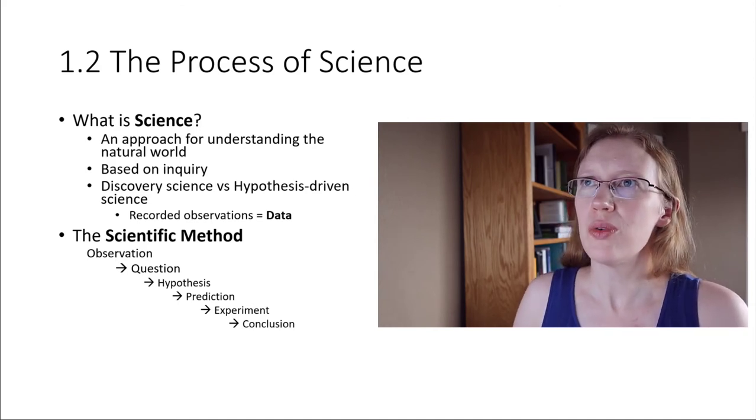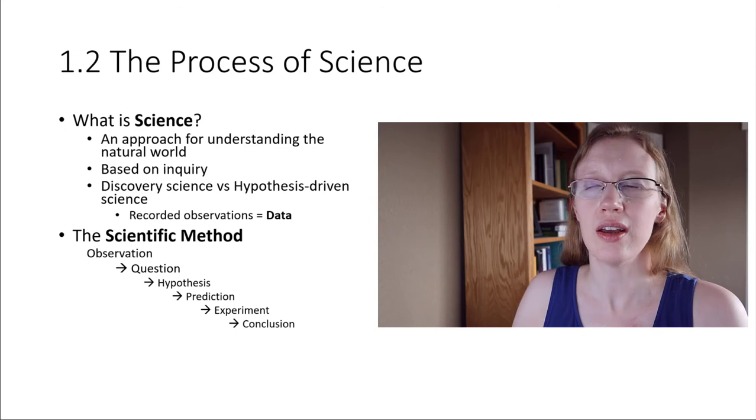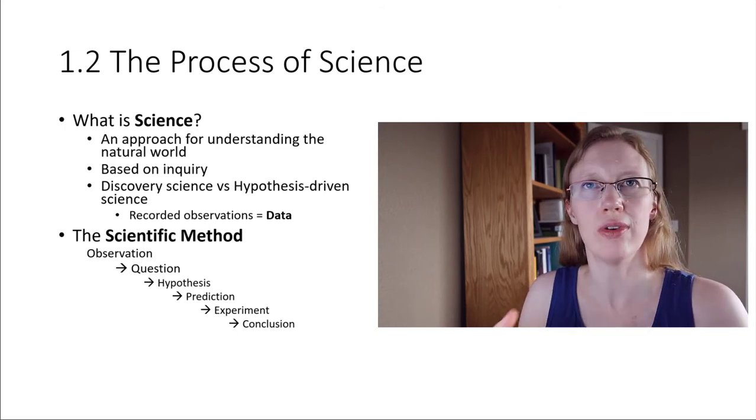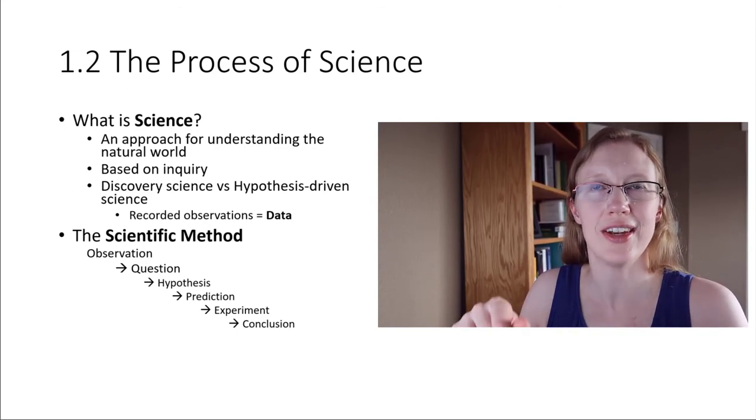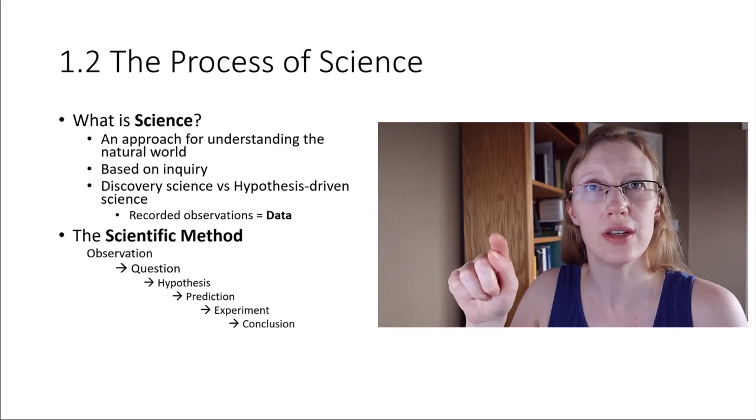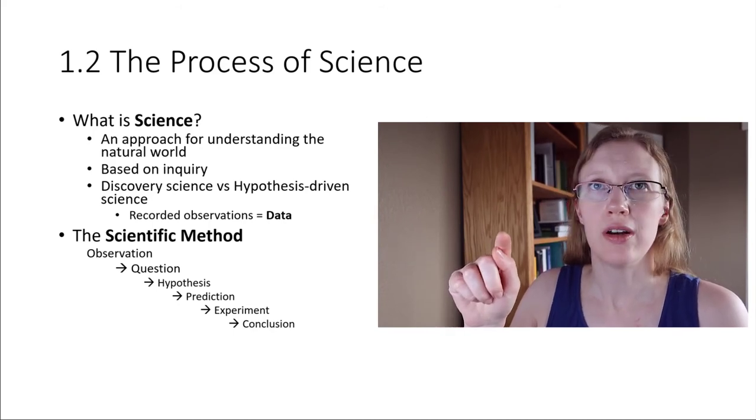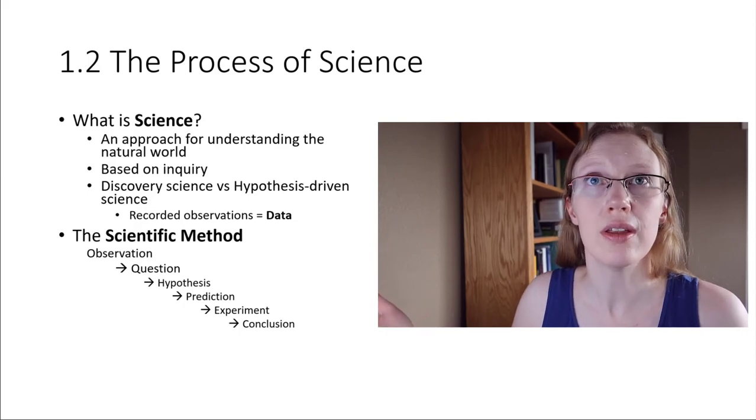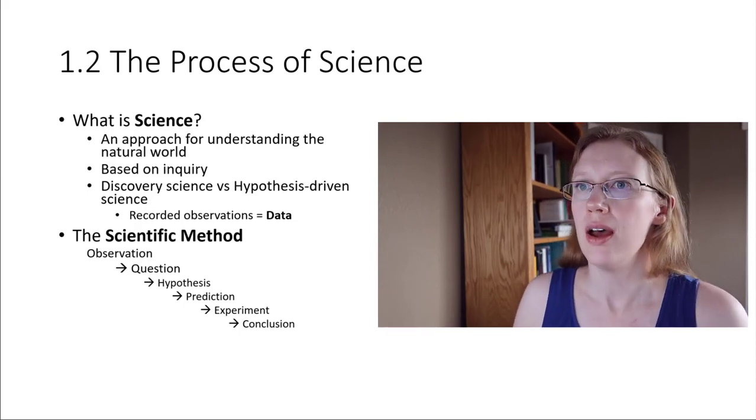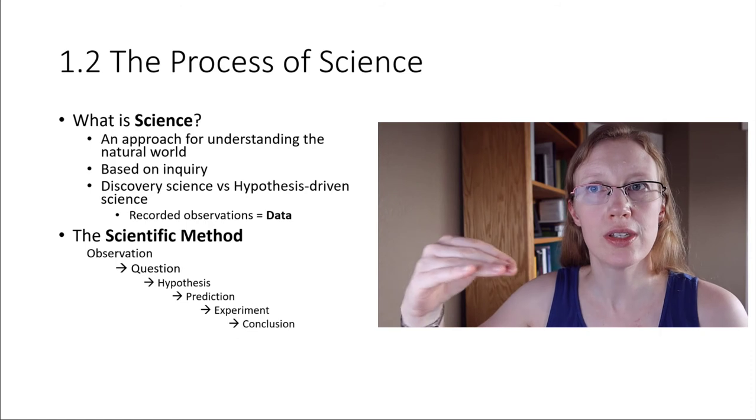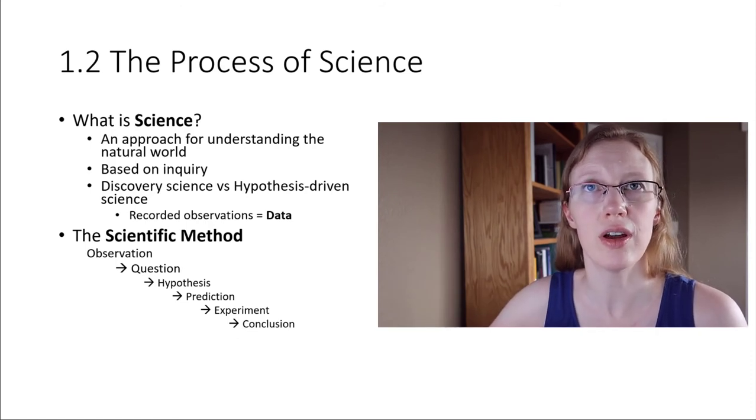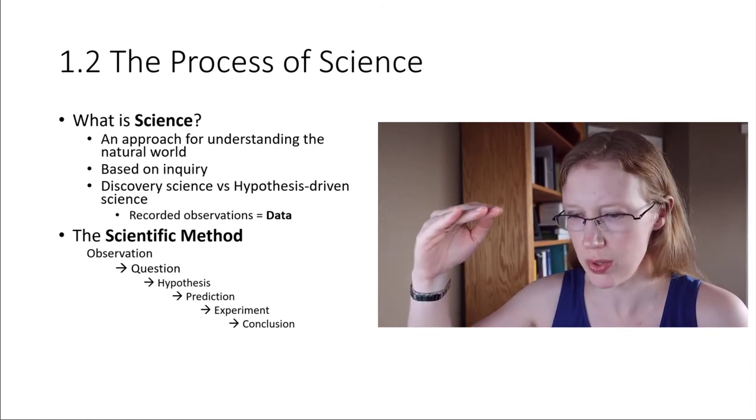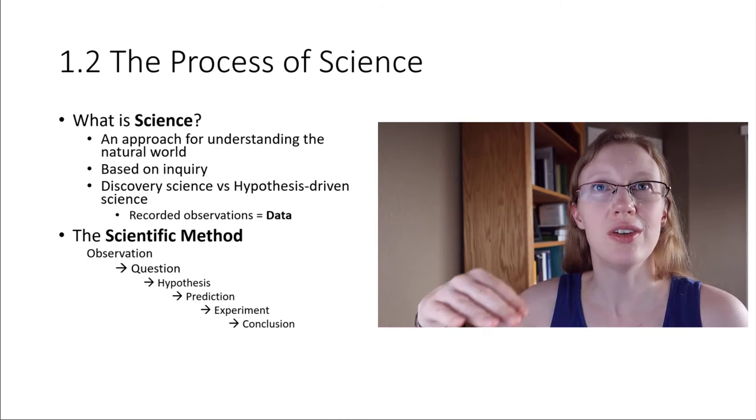But if the remote doesn't work, here's the important thing. This would lead us to a kind of a revise and repeat cycle here. We would revise our hypothesis. Maybe it's not the batteries. Maybe it's something else. Maybe the TV is unplugged. That could be our new hypothesis. And then we would continue back through the scientific method. After we revise our hypothesis, then we would go on, make a new prediction, and run a new experiment.